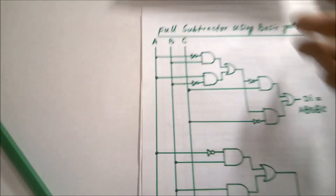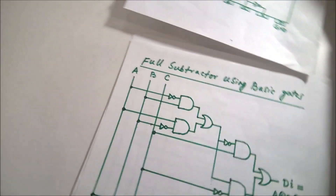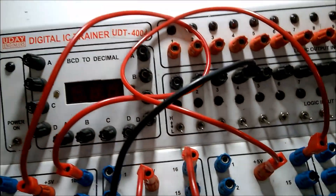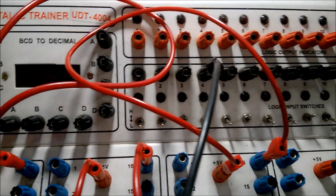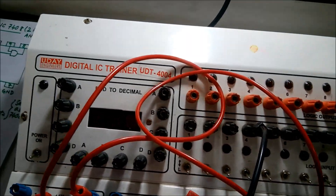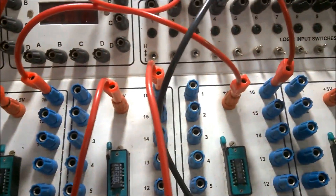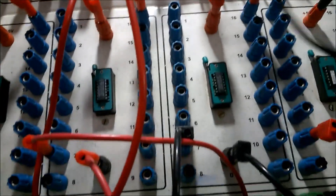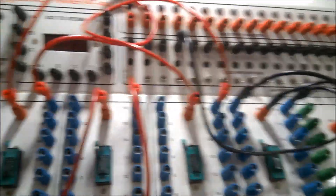Now starting the connections: from input A, it is going to the NOR gate. This is the AND gate, this is also an AND gate, and this is an OR gate, and this is a NOR gate. From A it is going first to the input of the NOR gate, and the output of the NOR gate is coming to the AND gate.